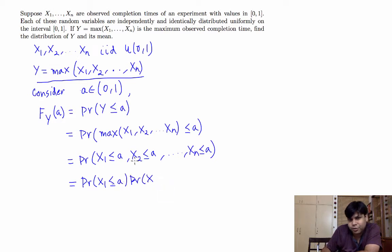So probability that x1 is less than equal to a, x2 is less than equal to a, xn is less than equal to a, can be written as probability that x1 is less than equal to a, times probability that x2 is less than equal to a, times probability that xn is less than equal to a.